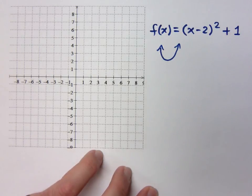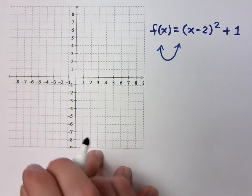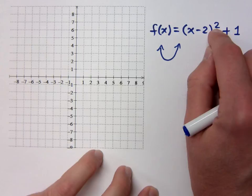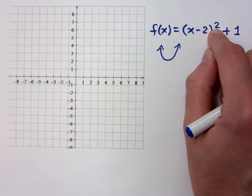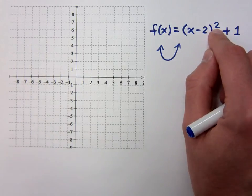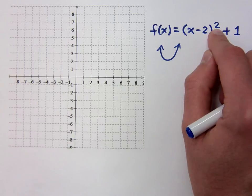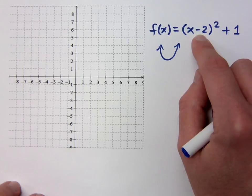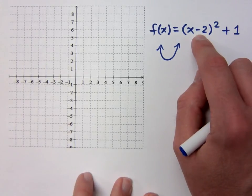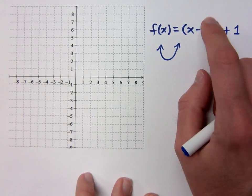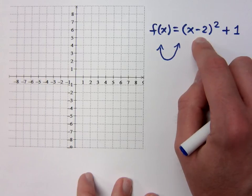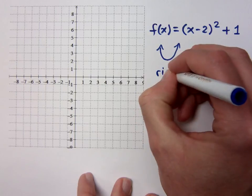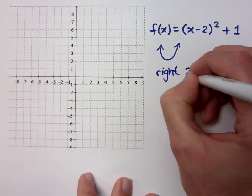Now, what have I done to this shape? It doesn't matter what this guy is out here. If this is a square, a cube, a fifth, square root, sine, cosine, it doesn't matter what your function is. Whatever is inside, you do the opposite of what you see horizontally. Inside, horizontal, opposite. I see negative 2, which means I will go to the right 2 units.